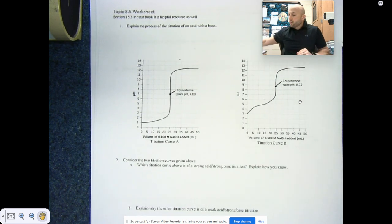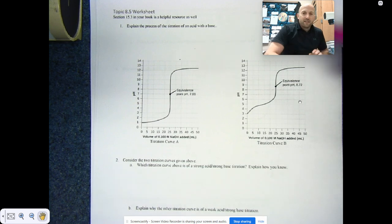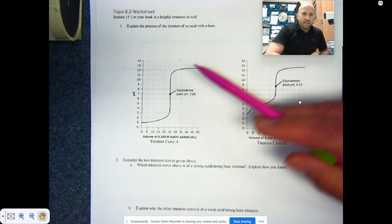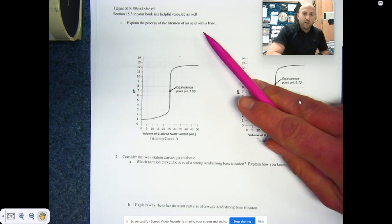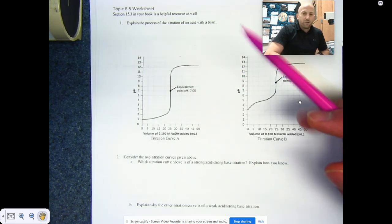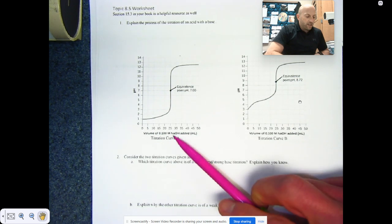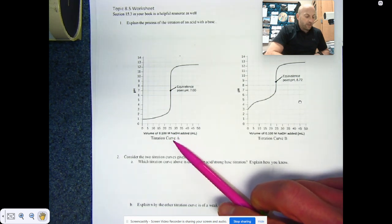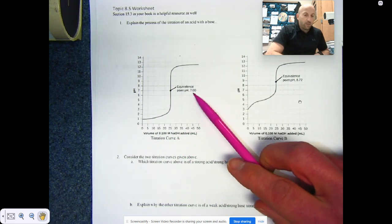Okay, so with this I have, let me grab a pencil, I've worked through a lot of these already. Some of these I have left because I think you can handle it. Explain the process of the titration of an acid with a base. That's right from the notes. Explain what's going on, the more detail you can do the better. One of these, you can see, we have titration curve A with an equivalence point right at seven.